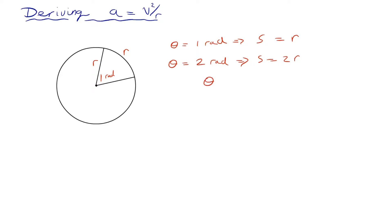And of course, this is going to be generally true for theta, if any number of radians, let's just say theta radians. And when the angle subtended is theta radians, then the arc length is going to be theta r.